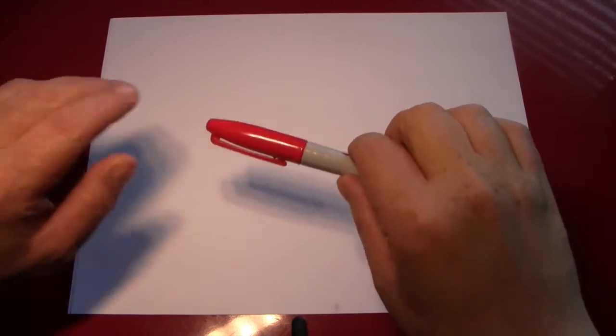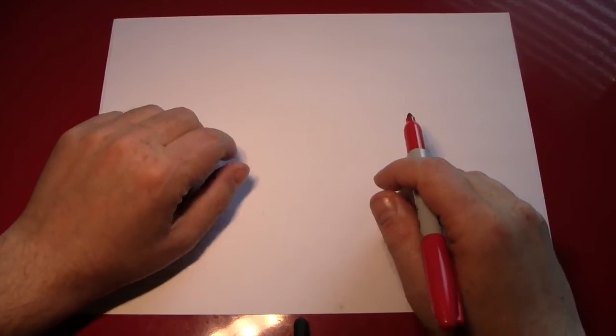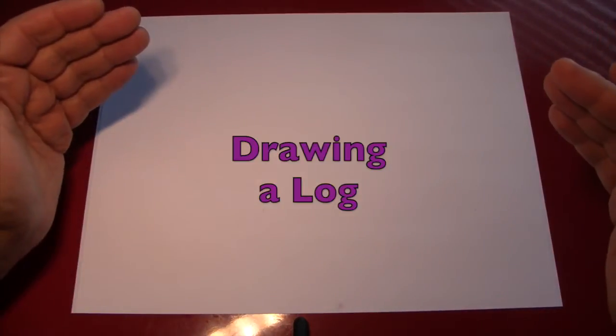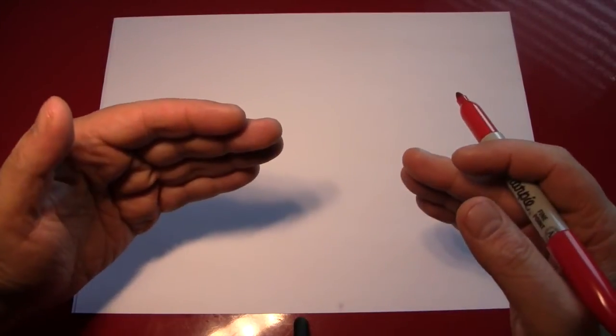Hello again, everybody. It's the Reverend Jay Goldstein, and welcome to another episode of Doodling with Reverend Jay. Today's episode will be drawing a log. Now, please excuse the lighting today, as we had an equipment problem. I'll try to get that fixed as soon as possible, but I won't let it stop me from drawing these little doodles.